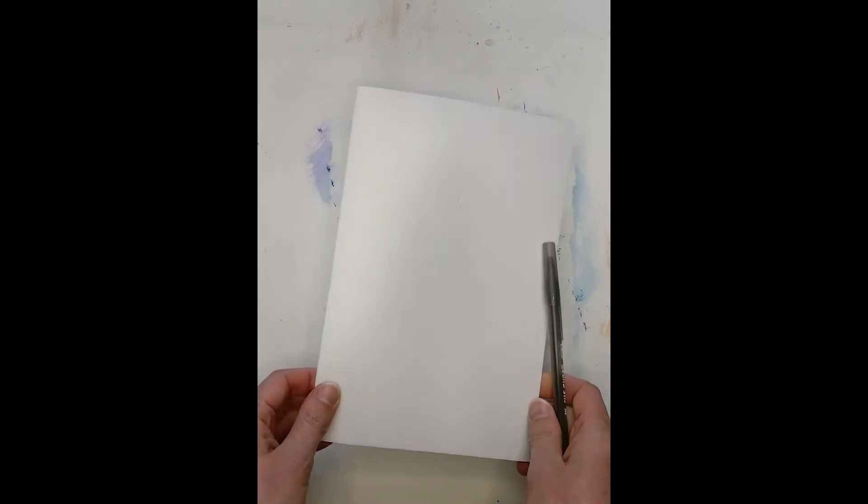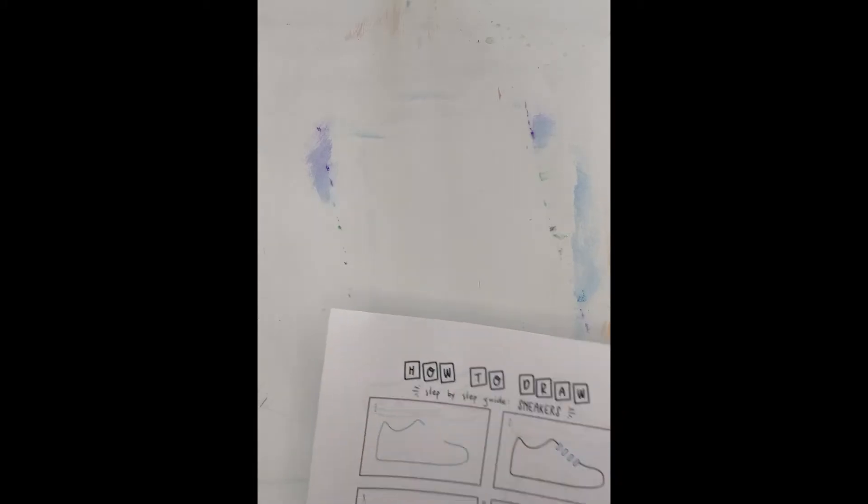We are going to be instead using a piece of styrofoam like this. This is a styrofoam printing plate and a ballpoint pen. But it'll allow us to create kind of a faux lino cut with a lot of colors at the same time, like Andy Warhol's screen prints. But before we dive into the actual printing part, we need to figure out what we're doing.